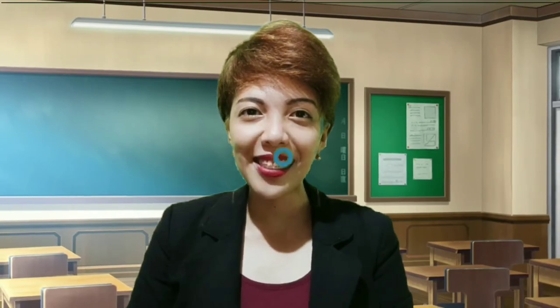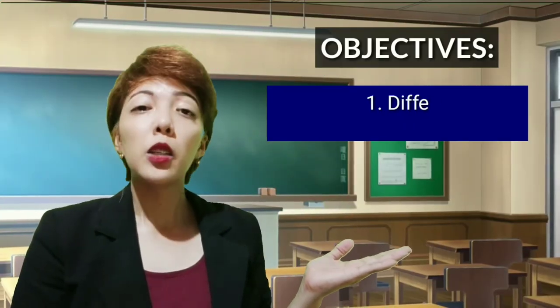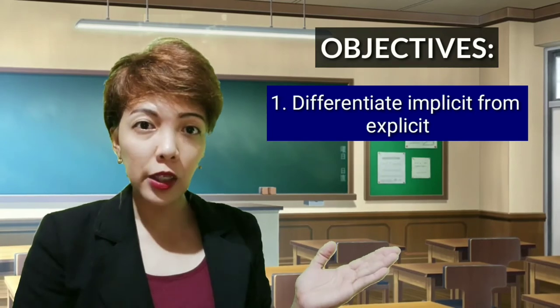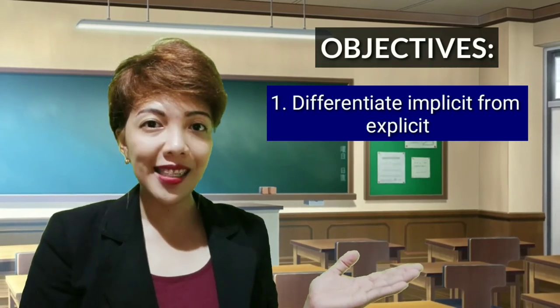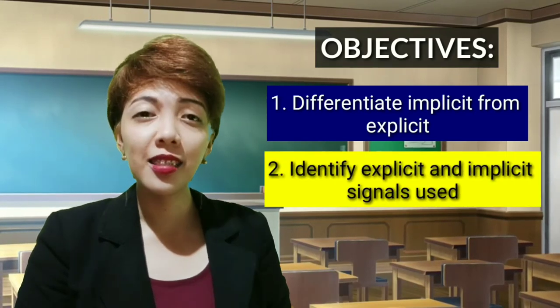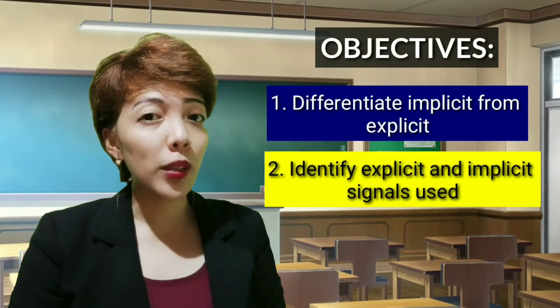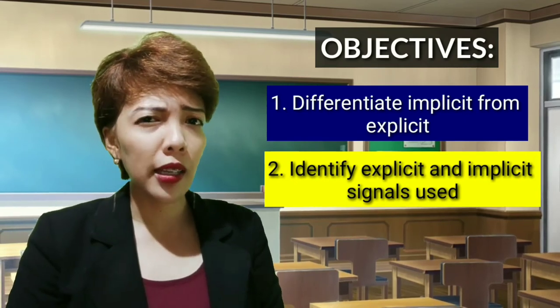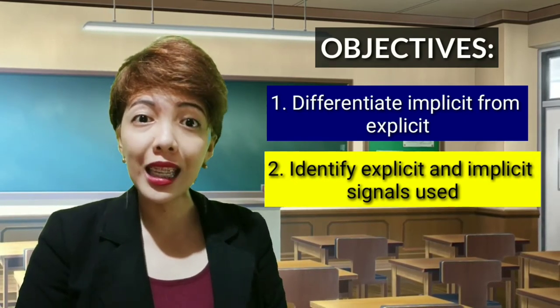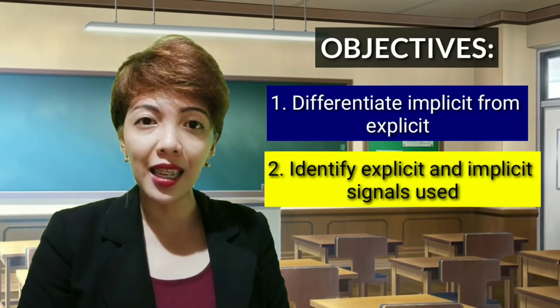Before we do those things, let's go over our objectives. First, we will differentiate implicit from explicit. Second, we're going to identify the explicit and implicit signals in the samples that we're going to have later.